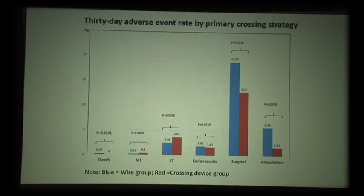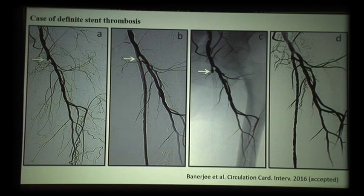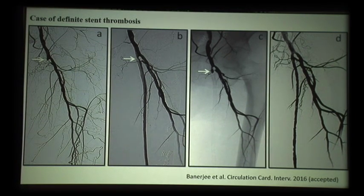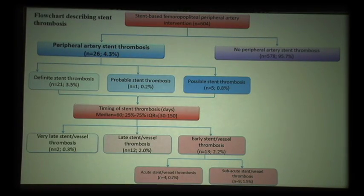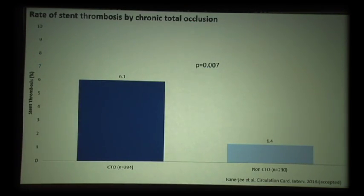Thirty-day and one-year outcomes are completely not different between approaches. We also have a paper accepted in CERC Interventions on peripheral artery CTO and stent thrombosis — the first systematic evaluation of peripheral artery stent thrombosis in the literature. Our group proposes the current incidence is 4.3%, and one of the most important contributors of stent thrombosis in the periphery is the presence or absence of a CTO lesion.